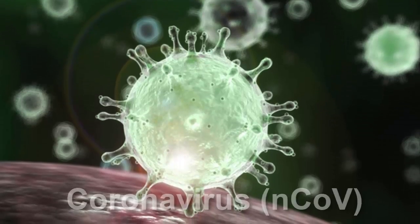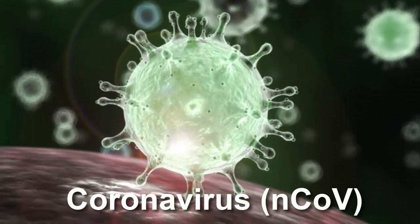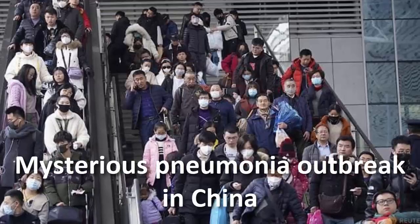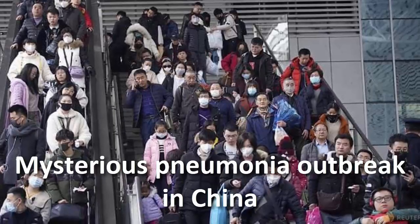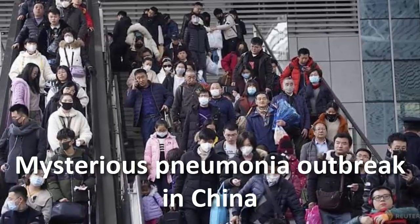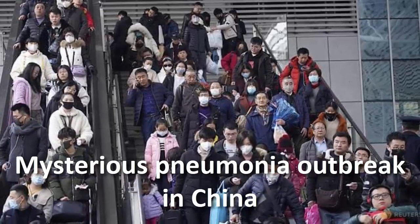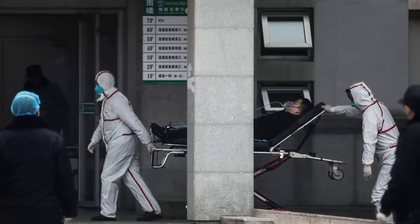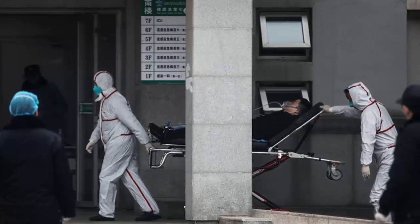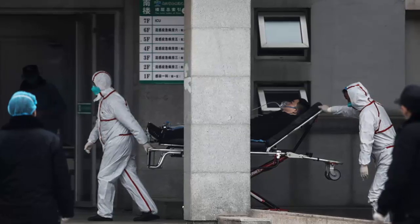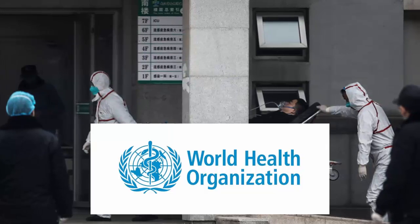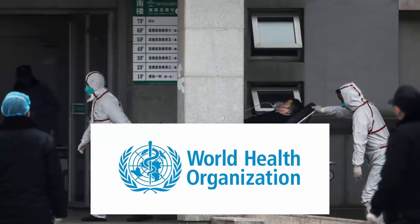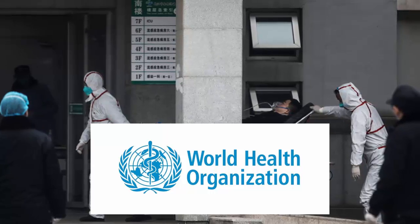This is a quick and short video on coronavirus. There was a mysterious pneumonia outbreak in China which has been linked to a virus that has never been seen before. Chinese scientists have identified the virus as a new type of coronavirus. As of now, it is called coronavirus until it gets an official name by the World Health Organization.